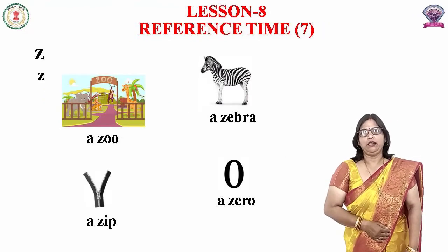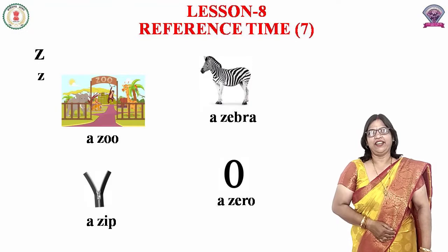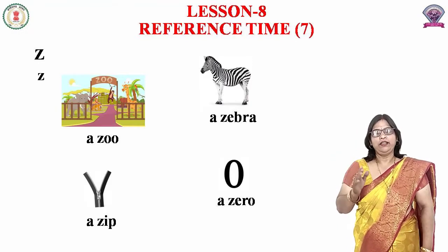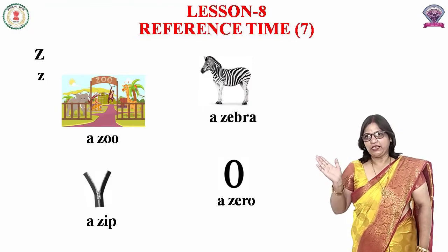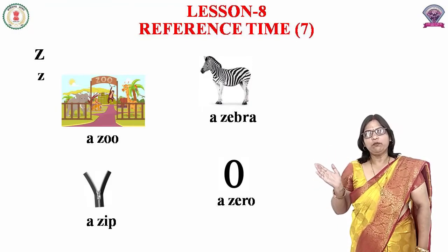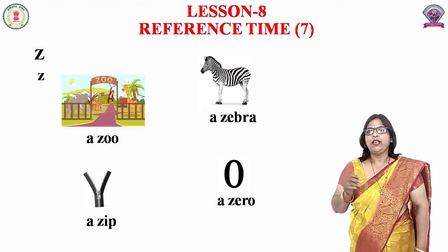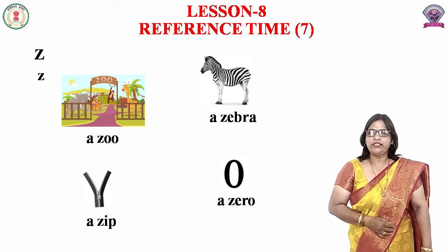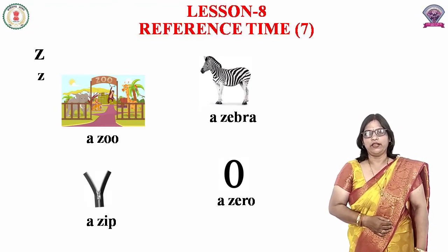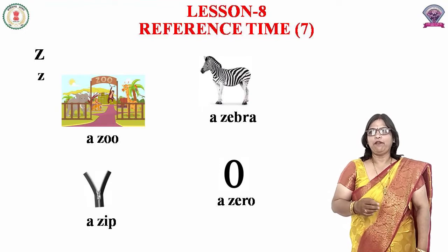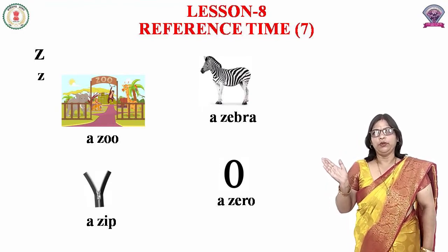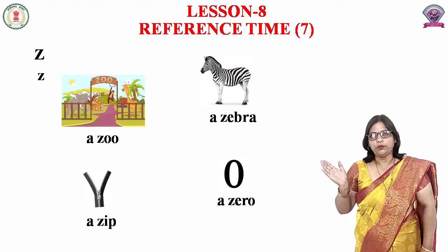आपको screen में letter दिखाई दे रहा है — Z। ये capital Z है, उसके नीचे small Z है। इस Z से बनने वाले कुछ words देखिए। पहला word है zoo — Z, double O, zoo।